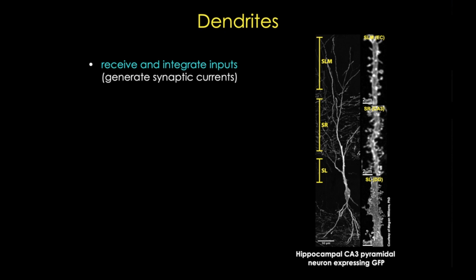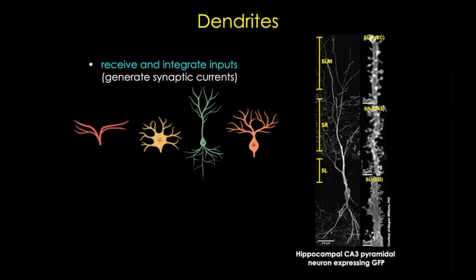Now the job of dendrites is to receive and integrate inputs and generate a synaptic current. Dendrites can be highly branched, and again, the shape of the dendrite arbor reflects its function.